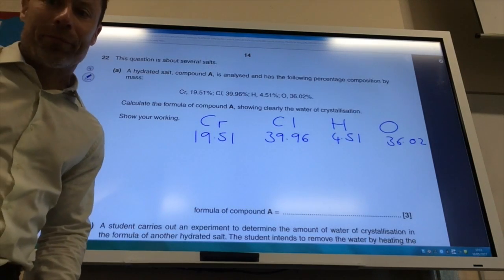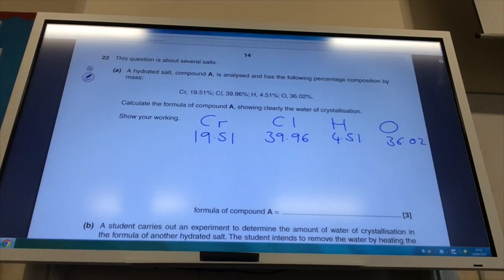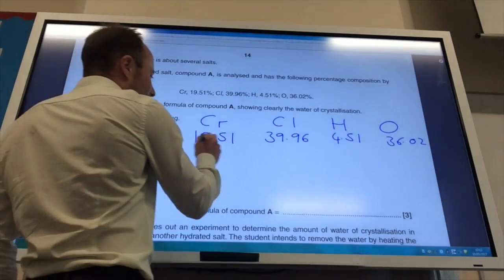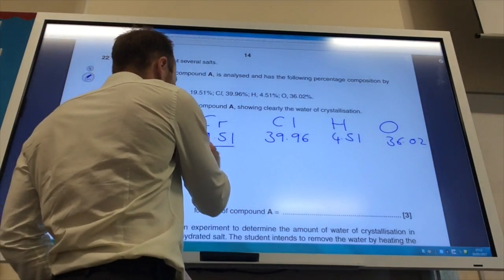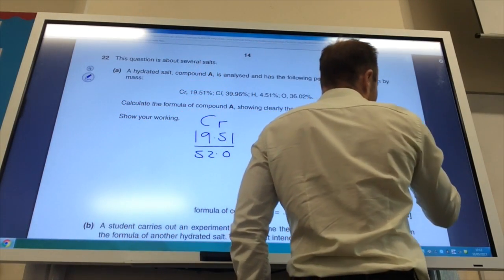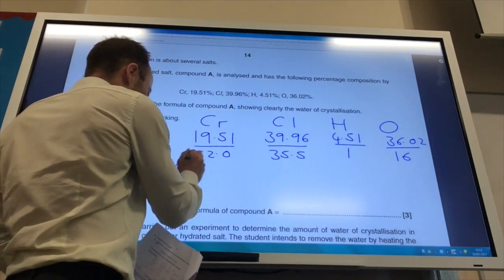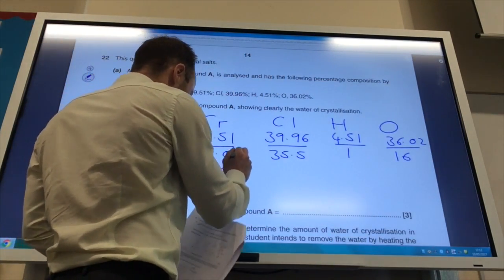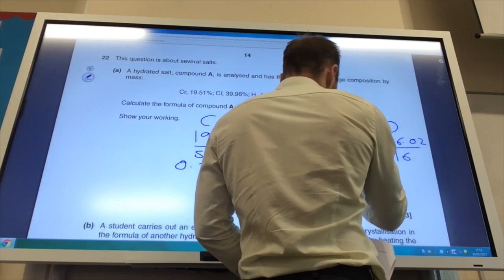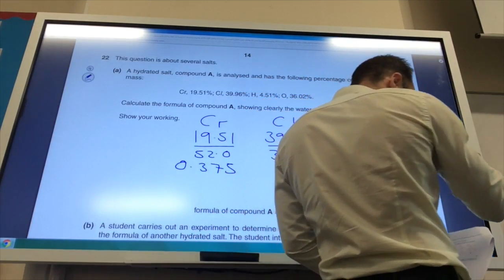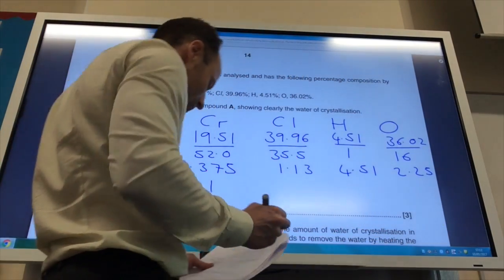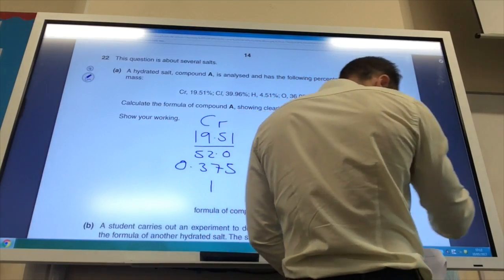Right, so on to question 22. And it wants me to find an empirical formula. So we've got chromium, chlorine, hydrogen, and oxygen. And it's giving me the percentage. So I need to find the moles. So I divide by the relative atomic mass of each one, which of course you can find on your periodic table. And you'll get the ratio as follows. So for chromium, 0.375. Chlorine, 1.13. Hydrogen is 4.51. And oxygen is 2.25. Divide by the smallest one, which of course is chromium. And you get 1 to 3 to 12 to 6.